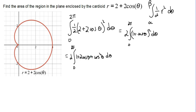The first two terms of that are easy to integrate, so we end up with 2 times theta plus 2 sine of theta, evaluated from 0 to 2 pi.